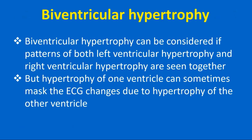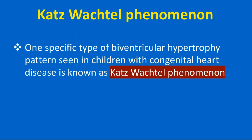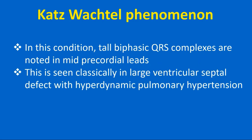Biventricular hypertrophy can be considered if patterns of both left ventricular hypertrophy and right ventricular hypertrophy are seen together. However, hypertrophy of one ventricle can sometimes mask the ECG changes due to hypertrophy of the other. One specific type of biventricular hypertrophy pattern seen in children with congenital heart disease is known as Katz-Wachtel phenomenon, in which tall biphasic QRS complexes are noted in mid-precordial leads. This is seen classically in large ventricular septal defect with hyperdynamic pulmonary hypertension.